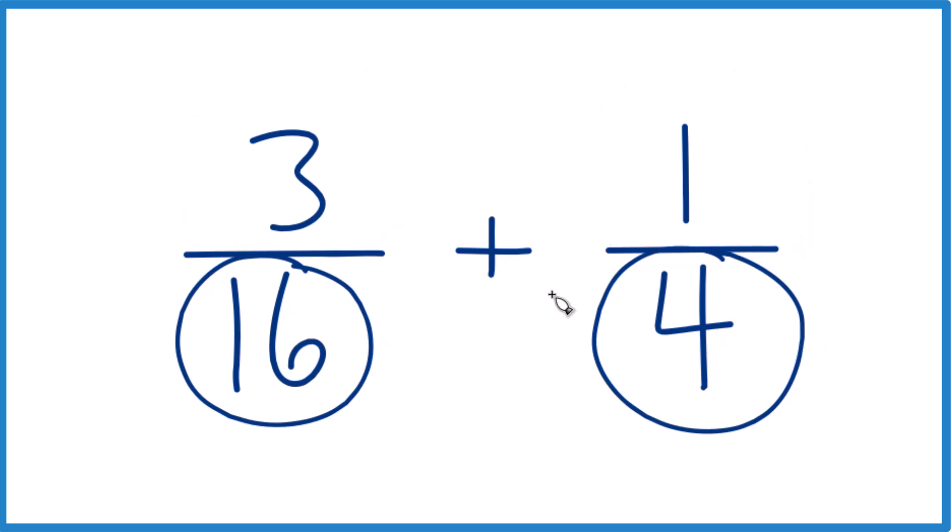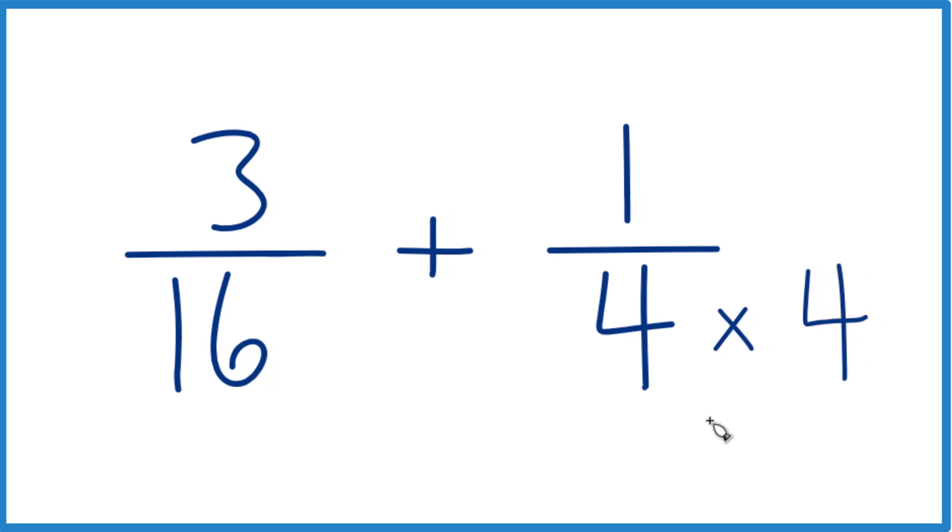So let's do this. Let's multiply 4 times 4 because that'll give us 16. Then we'll have the same denominator. And then let's multiply 1 times 4 as well because by multiplying 4 over 4, we're just multiplying this by 1. We don't change the value, just the way it's represented.